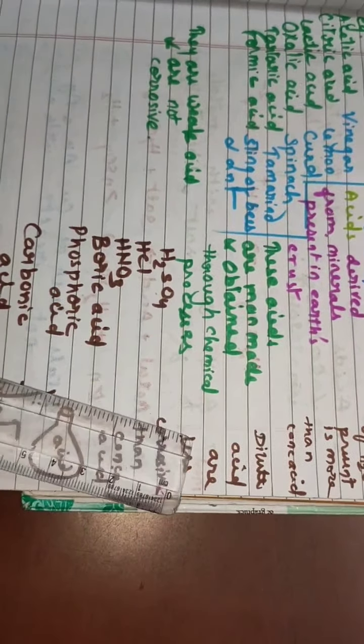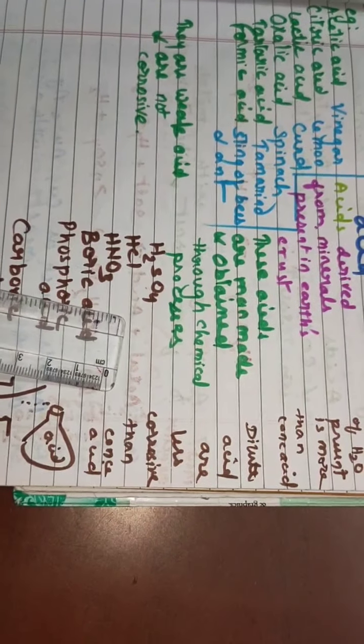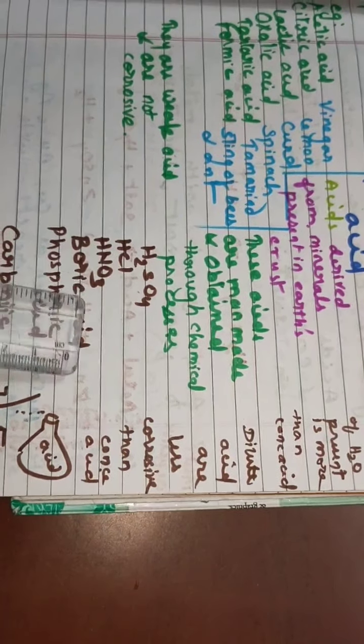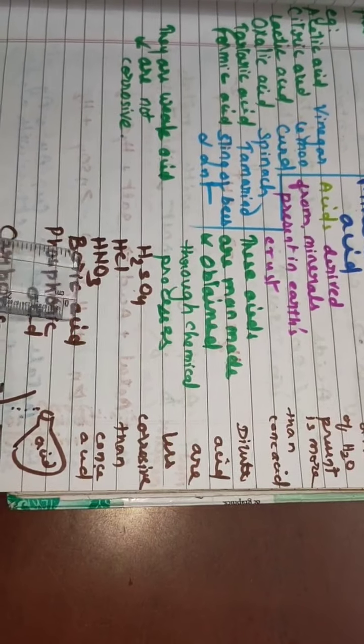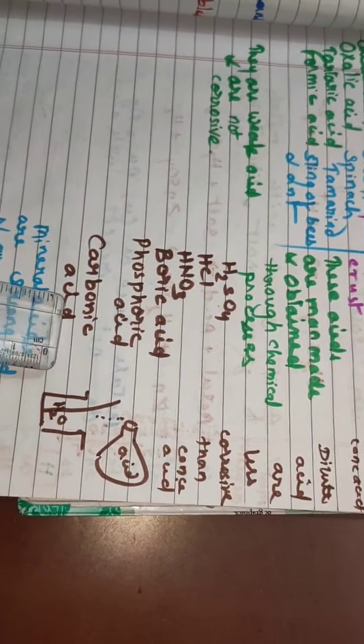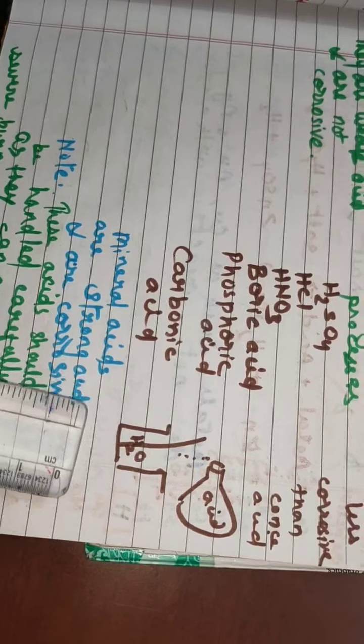So these acids are man-made and obtained through chemical processes. They are: sulfuric acid, hydrochloric acid, nitric acid, boric acid, phosphoric acid, and carbonic acid.